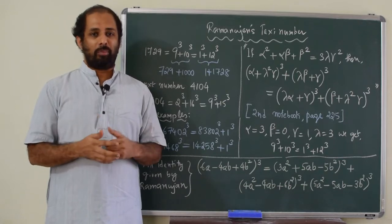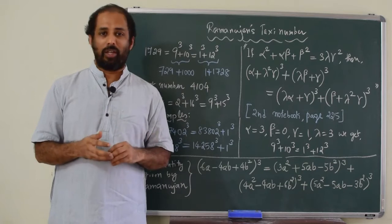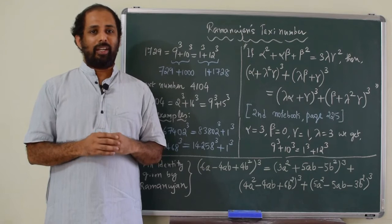And when Hardy was talking to Ramanujan, he told I came by taxi and the taxi number was 1729. And Hardy says, this looks like a very dull number.